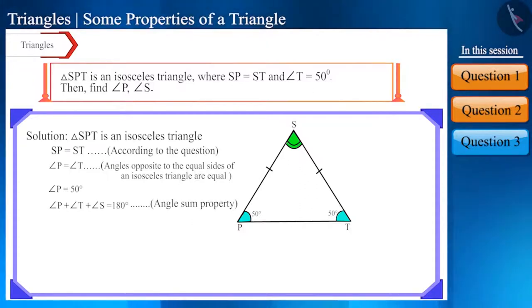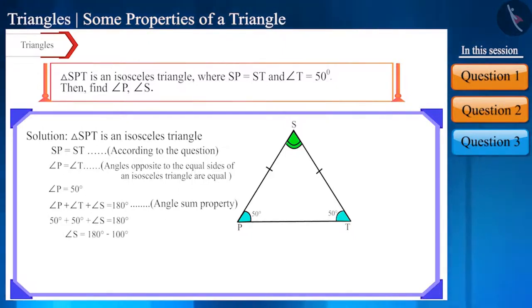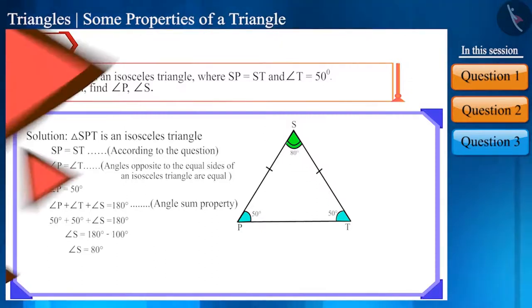We can write it in this way. We know the values of angle P and angle T. By substituting these values, we can find the value of angle S, which is equal to 80 degrees.